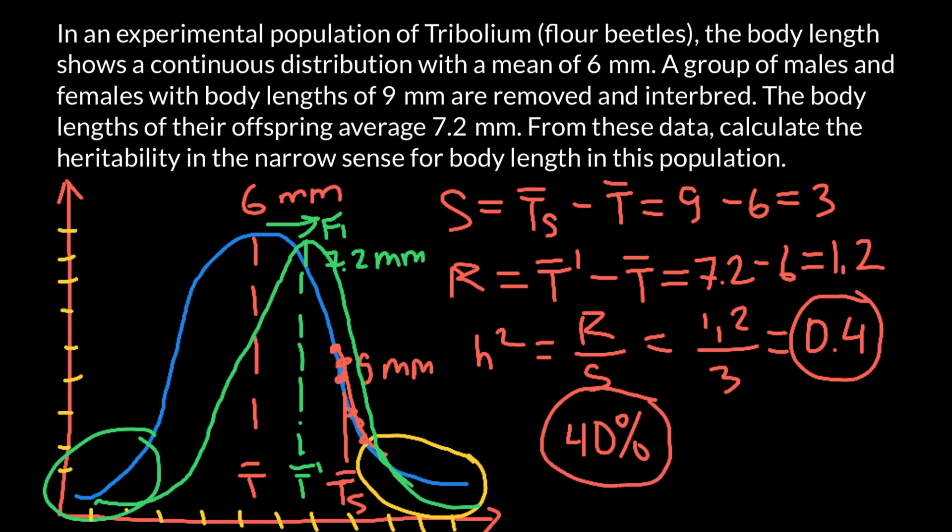So in our case, we can say that, for example, for the selection purpose, this is a good response. And we can select these beetles, for example, for size, because it has good genetic variation. And this genetic variation is not due to environment, as you see in many life examples.